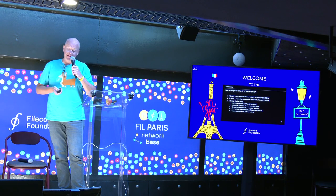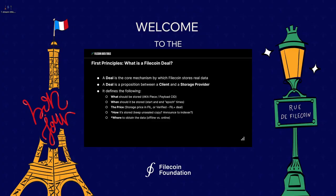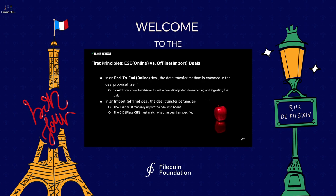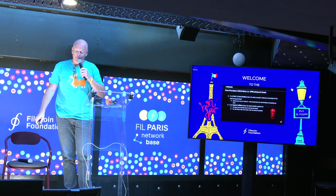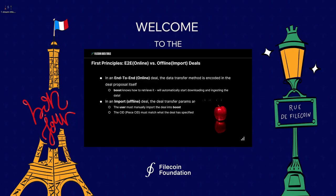Let's get into first principles. A deal is the core mechanism by which Filecoin stores data — a proposition between client and storage provider that defines what, when, price, how, and where. Does everybody know the difference between E2E online deals versus offline import deals?